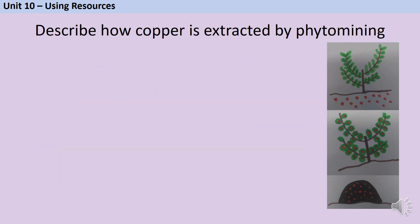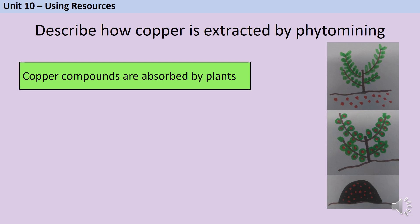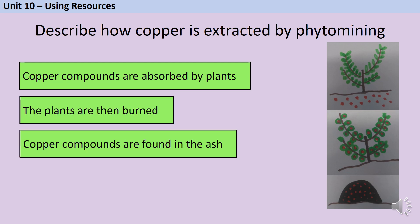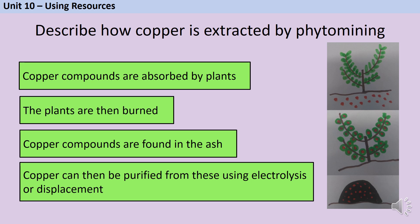A simple four-mark exam question might ask us to describe how copper can be extracted by phytomining. Pause the video and see if you can write down four bullet points. Firstly, the copper compounds are absorbed by plants. Then we describe how we get the copper out - by burning the plants. Then we note that the ash contains copper compounds, not pure copper. Finally, we describe how the metal can be extracted from the ash using either electrolysis or displacement.